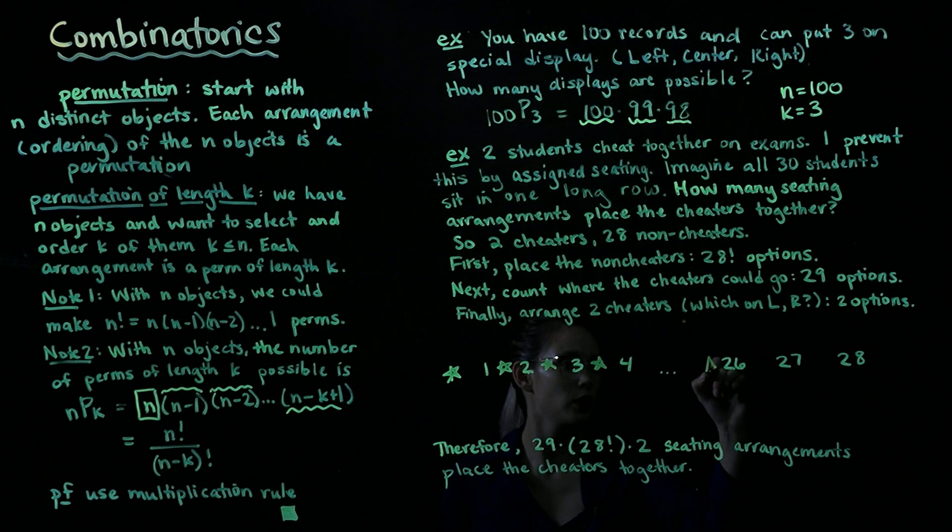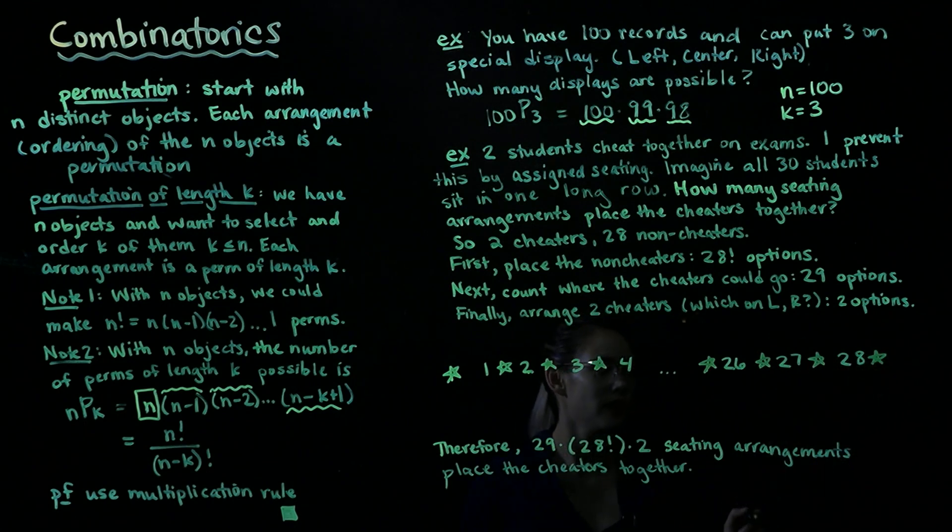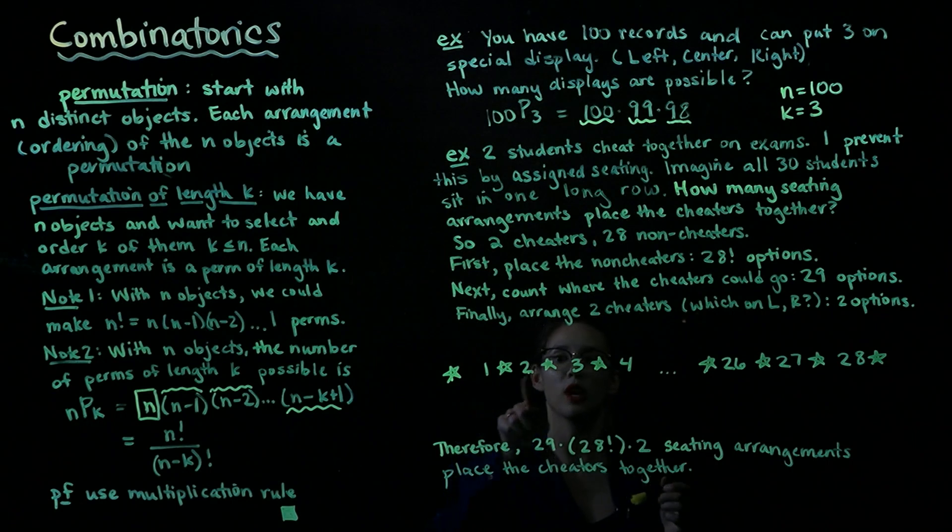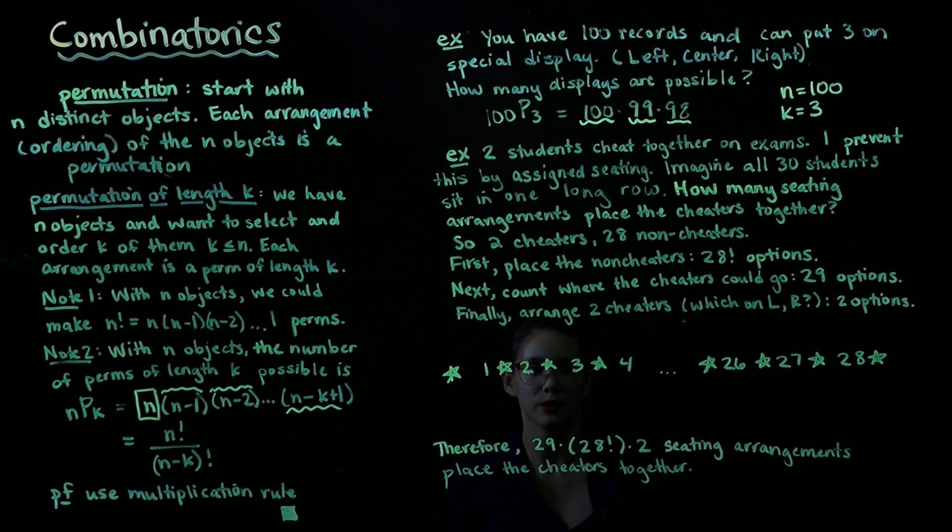Keep going between the 25th and 26th, 26th and 27th, 27th and 28th, or we could put them on the far right side of the classroom, on the right side of the 28th student. So if we count up that number of spots, then we get 29 different options. So there's 29 different places that we could put this clump of two cheaters.